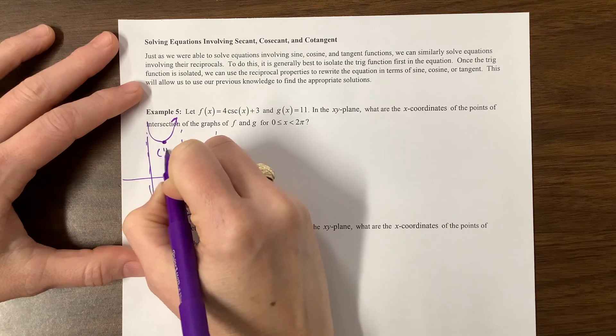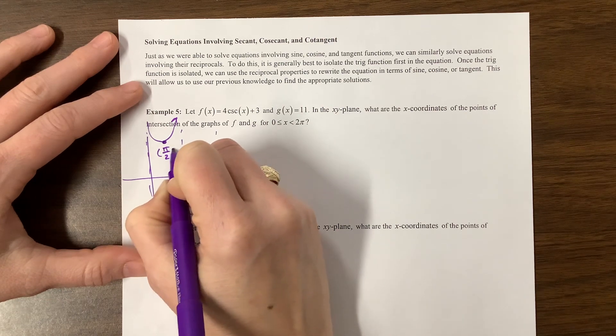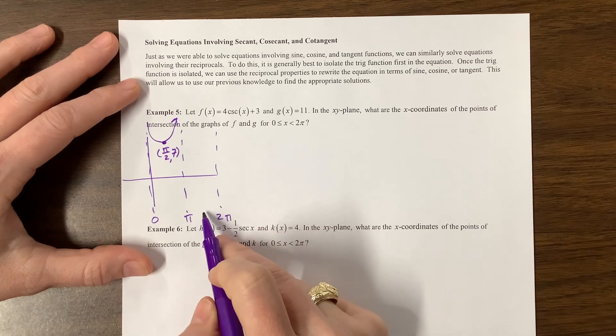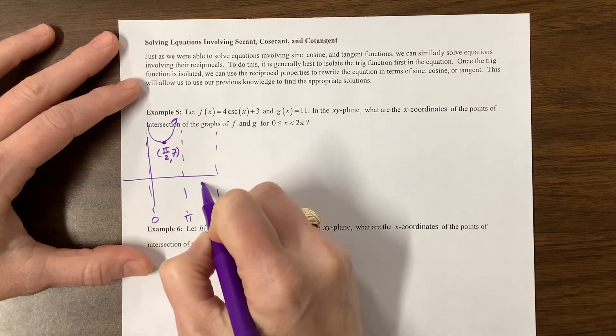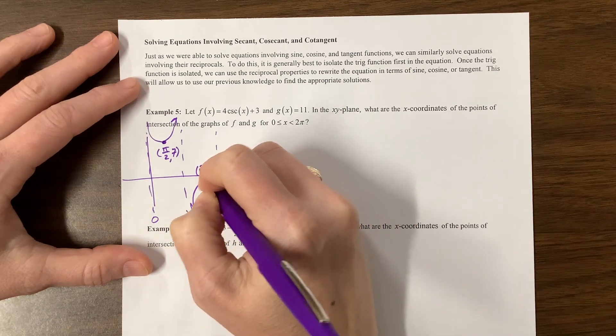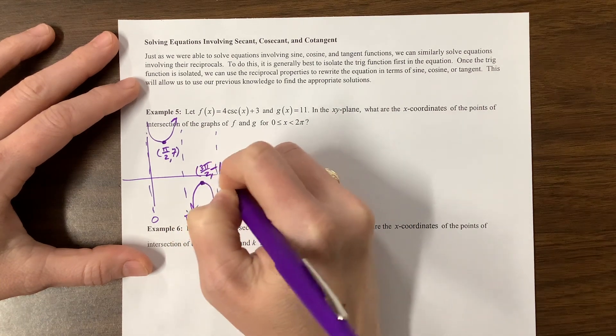So this is the point π over 2 comma 7. Then this one, it stretches down to negative 4, and then it goes up 3 units. So it's looking something like this. This is 3π over 2 comma negative 1.